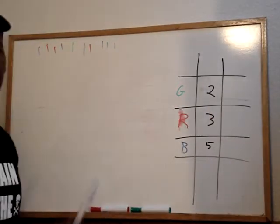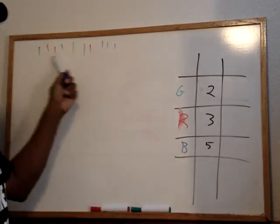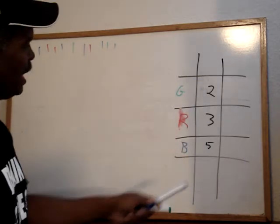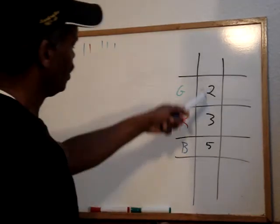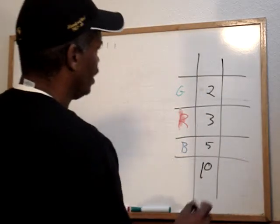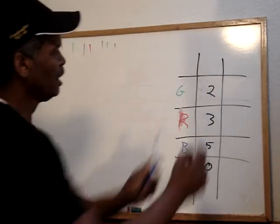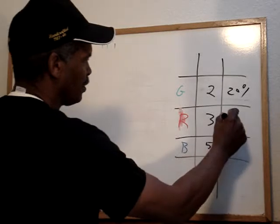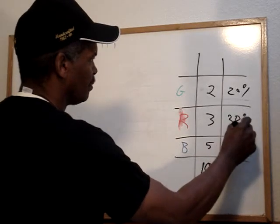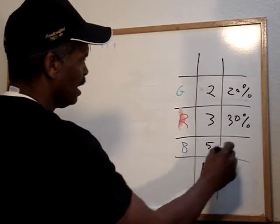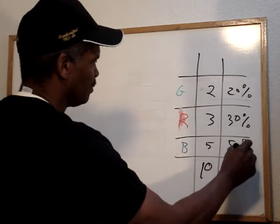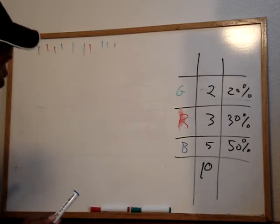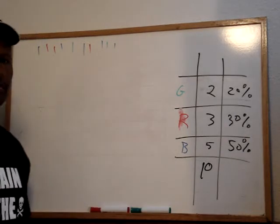Okay. This is historical. This has already occurred. So we're going to look at how many times this occurred. So you see we have 10. So 20% of the time you have a green, 30% of the time you have a red, and 50% of the time you have a blue. That's frequency distribution.